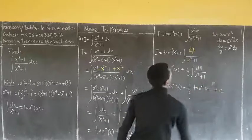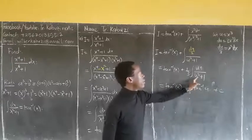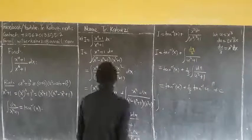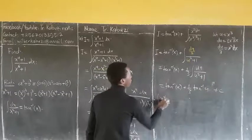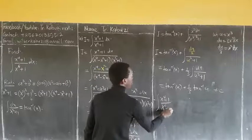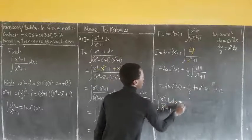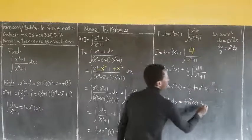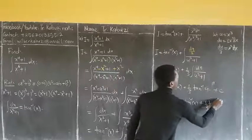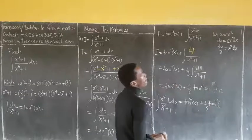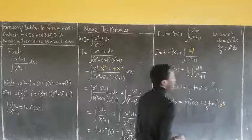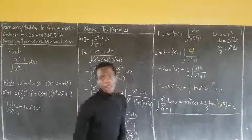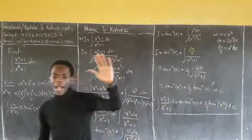Plus a constant of integration. Substituting back, since u = x³, the whole integral of (x⁴ + 1) over (x⁶ + 1) dx equals arctan(x) plus (1/3) arctan(x³) plus constant C. Hope you enjoyed this integral. Namaste.